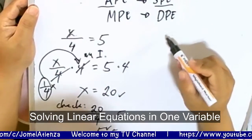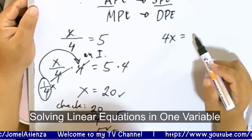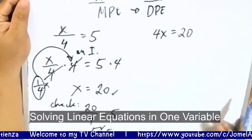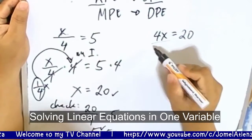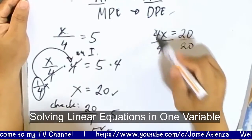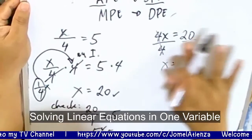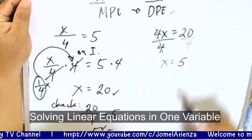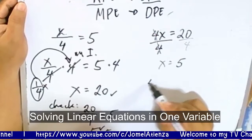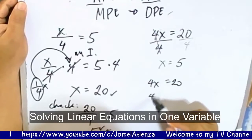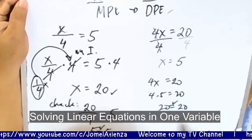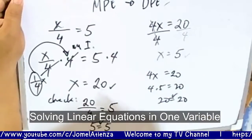Now let's say we have 4x is equal to 20. Using the division property of equality, we divide both sides by 4 to cancel it. So x is equal to 5. To check: 4 times 5 equals 20, so 20 equals 20. Both sides are equal to 20. Therefore the solution set is 5.